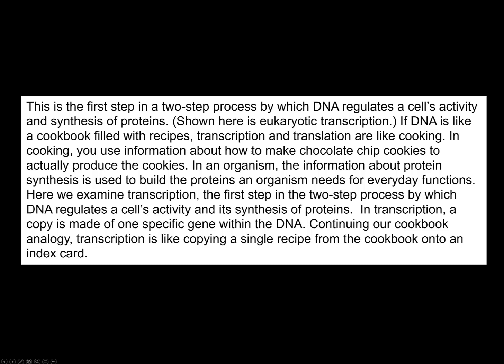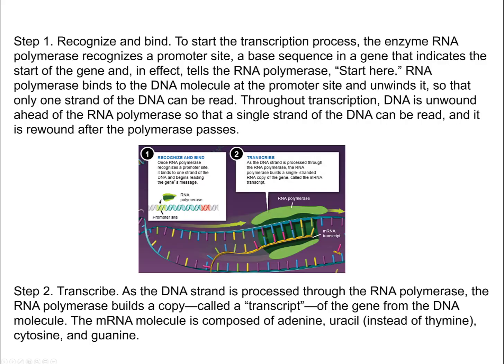The first step of this two-step process is transcription. DNA is like a cookbook filled with recipes — you use information to make chocolate chip cookies and produce the cookies. Similarly, the organism uses information about a protein to build it. RNA polymerase recognizes and binds the promoter, then polymerizes to make the messenger RNA from the DNA template.